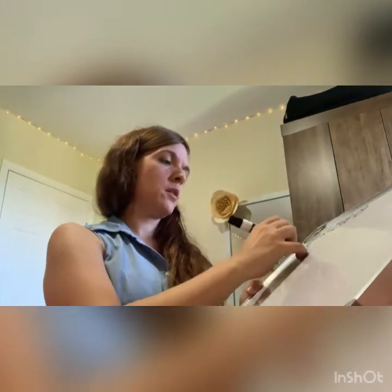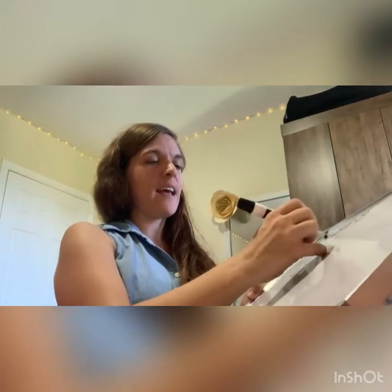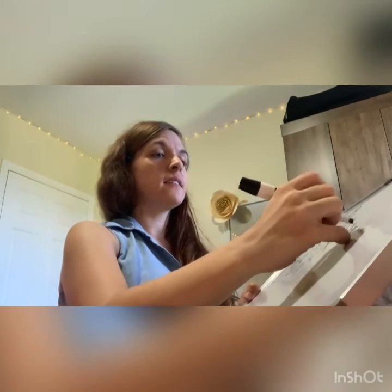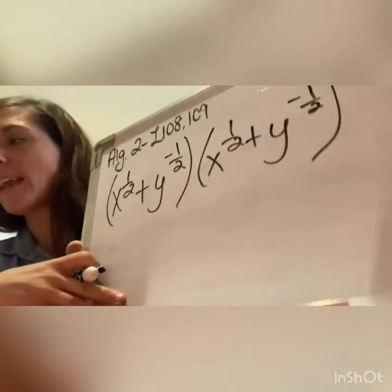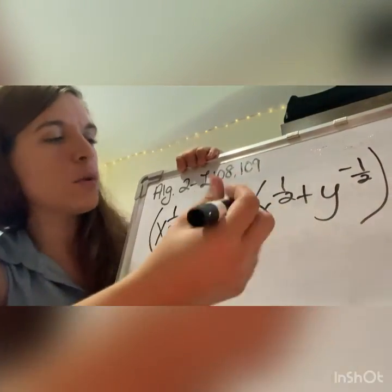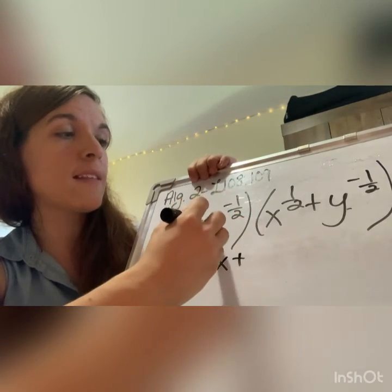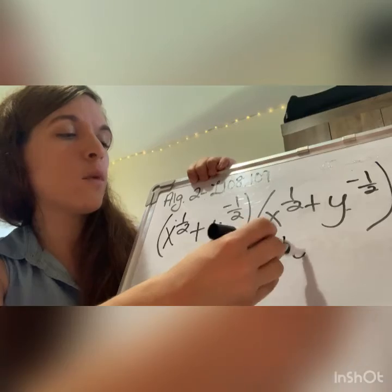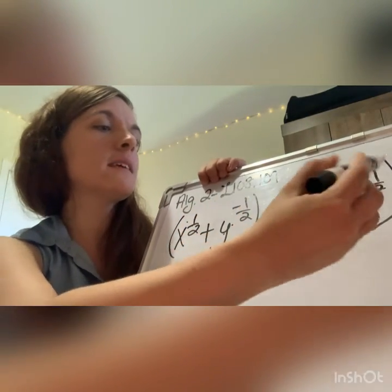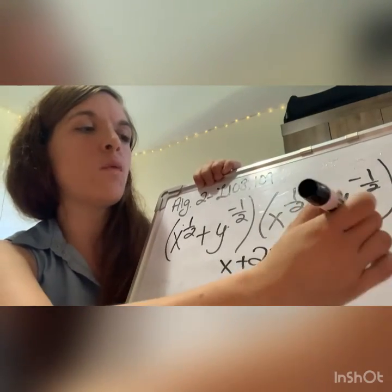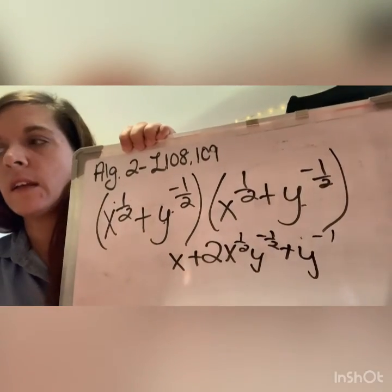Let's look at example three: x to the one half plus y to the negative one half, all squared. Writing it out to multiply, it's going to be like the exact same thing except with some negatives. This times this is x to the one. This times this is x to the one half and y to the negative one half, so two x to the one half y to the negative one half, plus y to the negative one — because adding negative one half plus negative one half gives negative one.